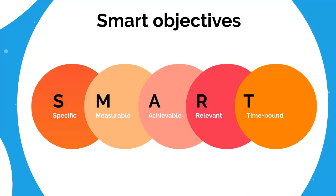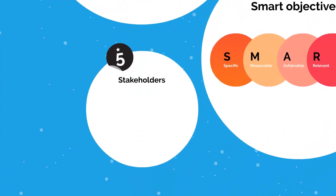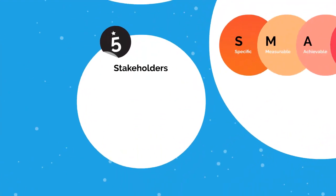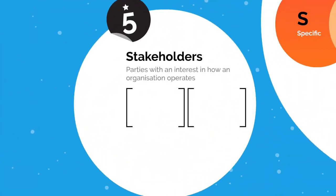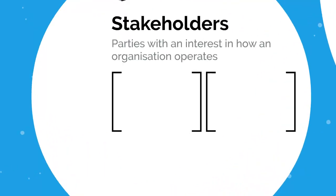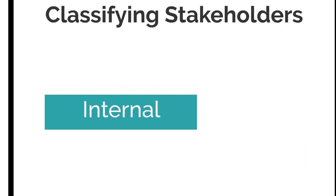That's how you or Bob or anyone can make their objectives effective — by making them SMART. Now we don't create strategies, missions, visions and objectives in a vacuum — they affect people. The people that are affected by our business decisions are called stakeholders. And if we want to be successful, then we need to know how to classify and satisfy our different stakeholders. We can have internal stakeholders — these are stakeholders residing within the organisation, such as managers and employees.